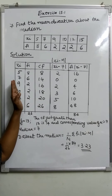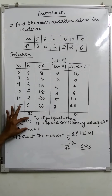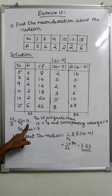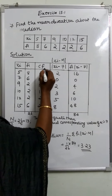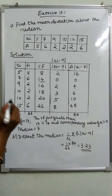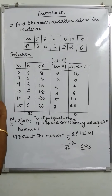The median limit is to the limit. 26 by 2 is equal to 13. n by 2 is compared to the cumulative frequency. n by 2 is equal to 13. 13 is compared to the cumulative frequency. 14 is the median class.